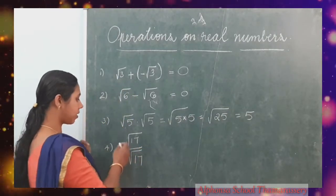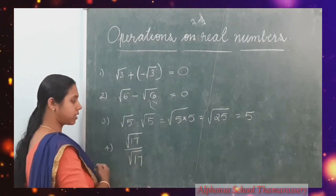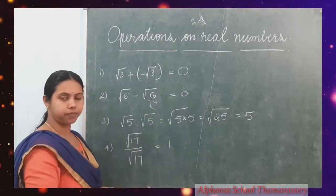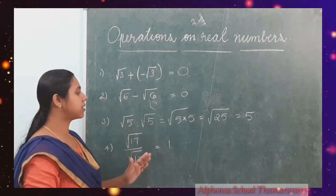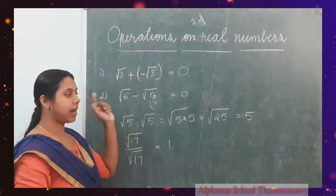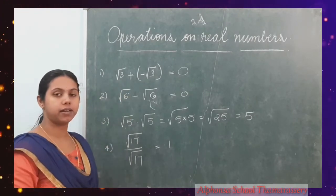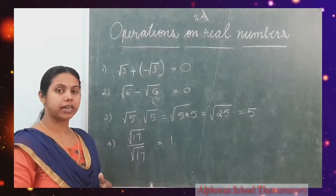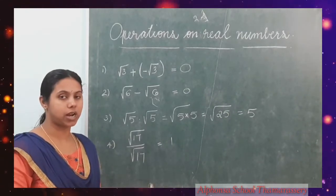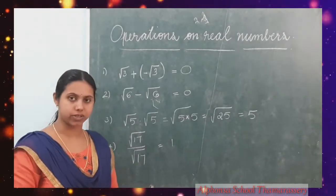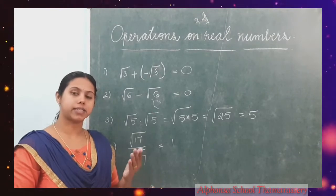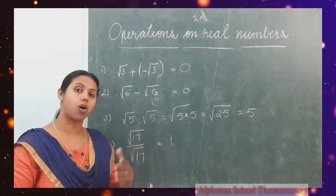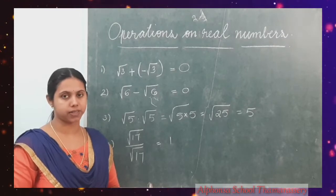Root 17 divided by root 17 is equal to 1. So in these cases, when we add, subtract, multiply or divide irrational numbers, we are getting rational numbers. So in the case of irrational numbers, we won't always get irrationals. If we add, subtract, multiply or divide, maybe you will get a rational or you will get an irrational number.